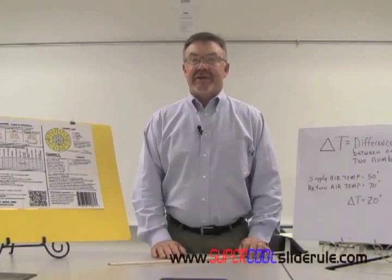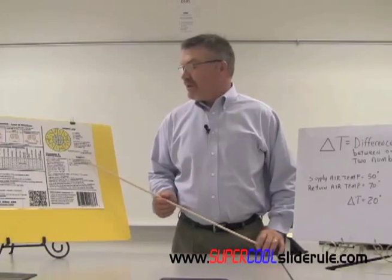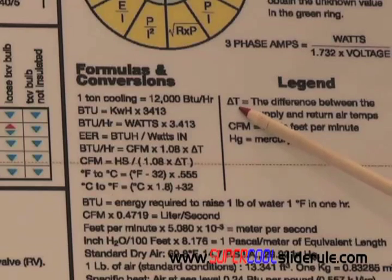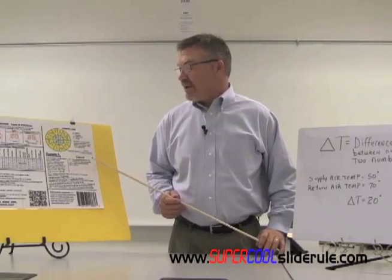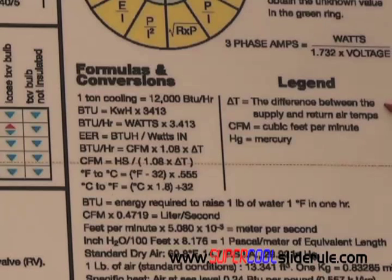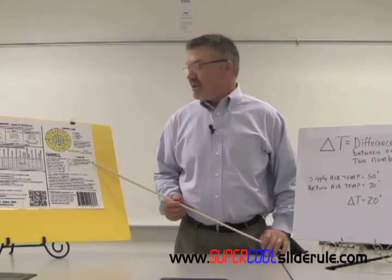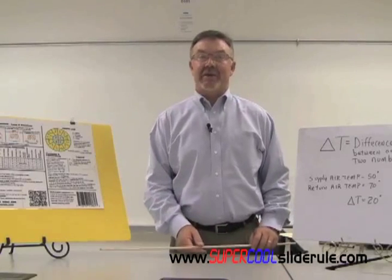This video is going to explain Delta T. Delta T is seen here. That is the symbol for Delta T. All it is is the difference between any two numbers. This one here says supply and return air temps, but Delta T is actually just the difference between any numbers.